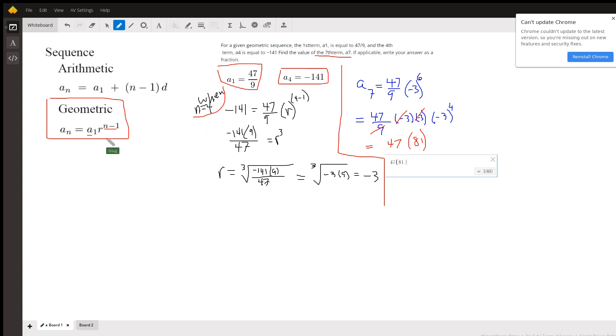So the first thing we've got to do is figure out what r is. We already know what a sub 1 is, and we know the fourth term is negative 141, so we substitute into this formula. There's a sub 1 right there, there's what we don't know—r raised to the 4 minus 1 power, or 3.